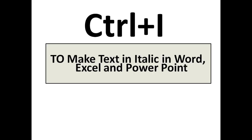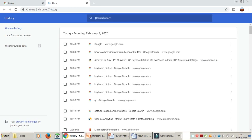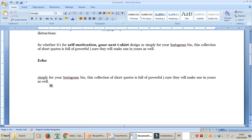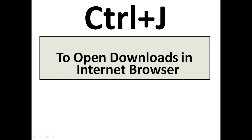The next one is Ctrl+I. Ctrl+I is to make your text italic — you can use it in Word, Excel, or PowerPoint. For example, I select a line or phrase in a Word file and press Ctrl+I. You can see here it automatically changes to italic.